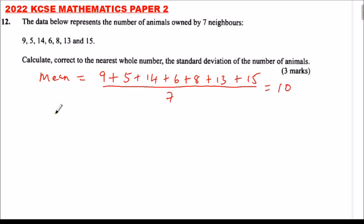Now we look for the deviations, deviation from the mean. That is, we get 10. 10 minus 9 is 1. 10 minus 5, 5 minus 10 is minus 5. We have 14 minus 10, that will give us 4. 6 minus 10 will give us minus 4. 8 minus 10, we get minus 2. 13 minus 10, we get 3. And 15 minus 10, we get 5. So those are the deviations.